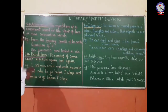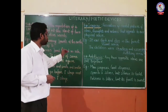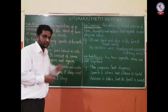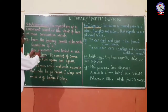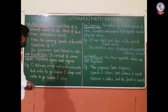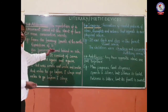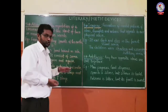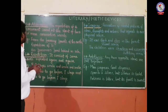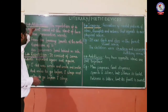In 'His horseman hard behind us,' the sound of H is repeated. This is the repetition of a consonant sound at the beginning of consecutive words, and therefore this is the poetic device alliteration.